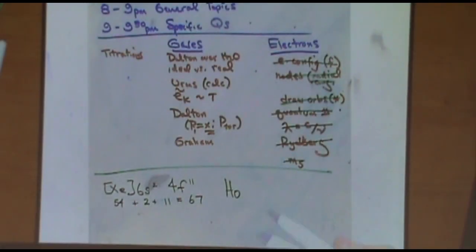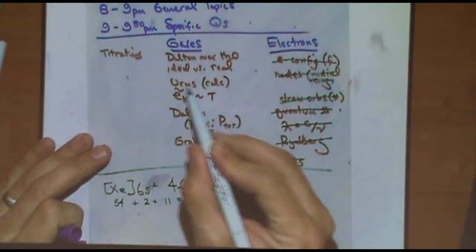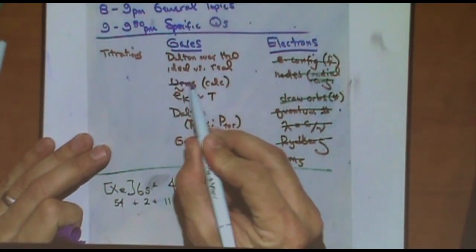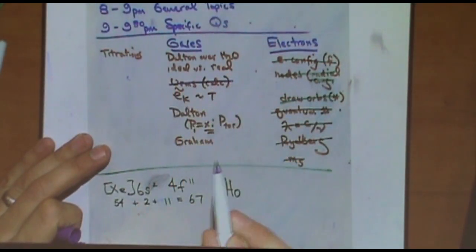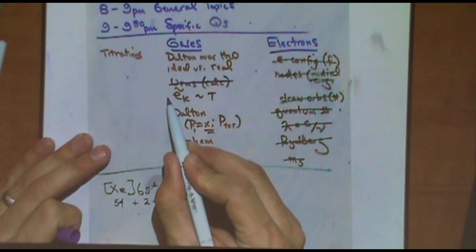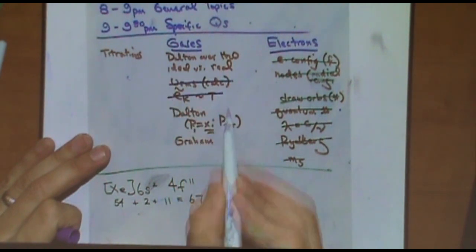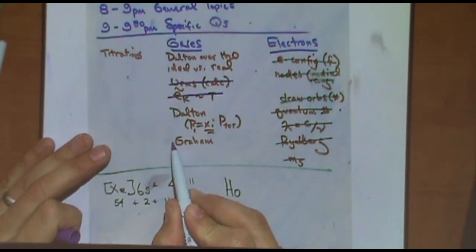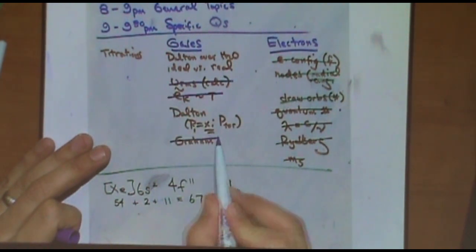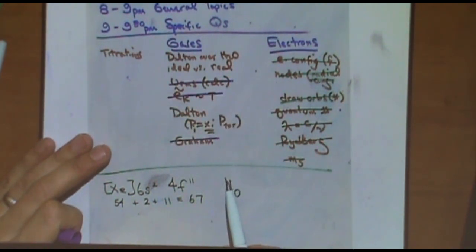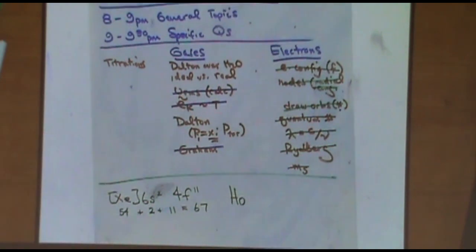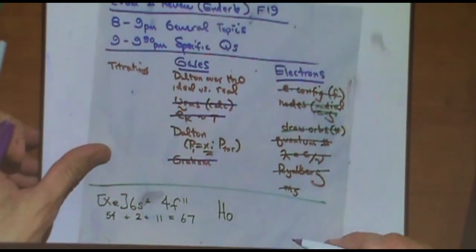Let's do root mean square, kinetic energy, and Graham's law. They kind of all go together because they're within the kinetic molecular theory of gases, so we're going to do all those together.